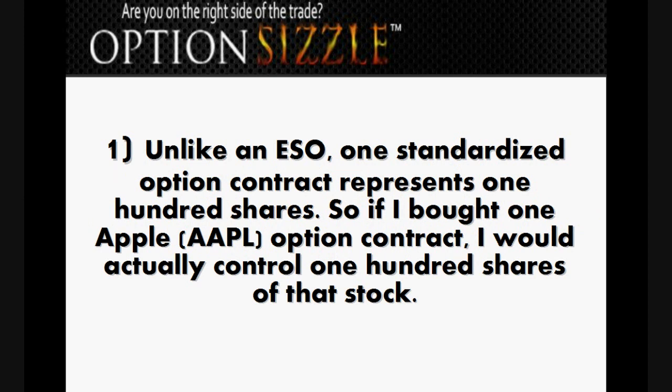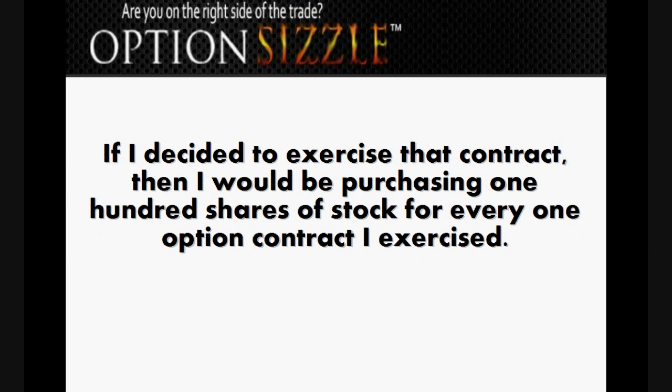Unlike an ESO, one standardized option contract represents 100 shares. So if I bought one Apple AAPL option contract, I would actually control 100 shares of that stock. If I decided to exercise that contract, then I would be purchasing 100 shares of stock for every option contract I exercised.